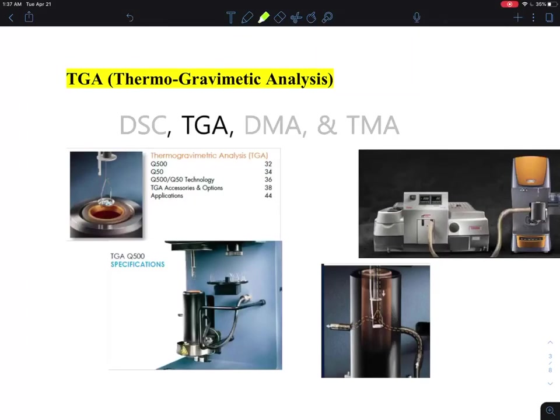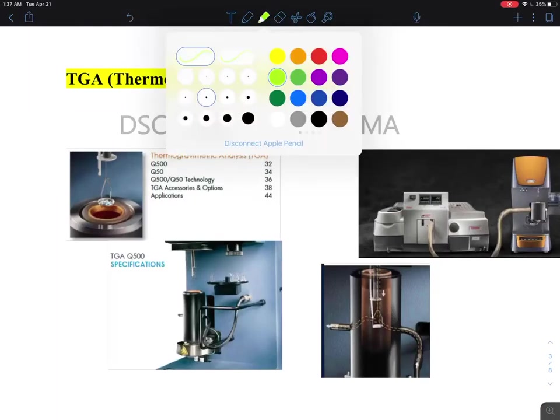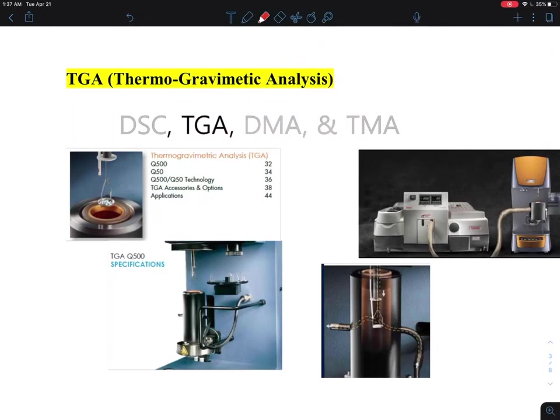Okay, so let me talk about some of the TGA. TGA, as the name is mentioned here, thermal - you are changing the temperatures - and gravimetric. Gravimetric is essentially you are measuring the mass of the sample and analysis.